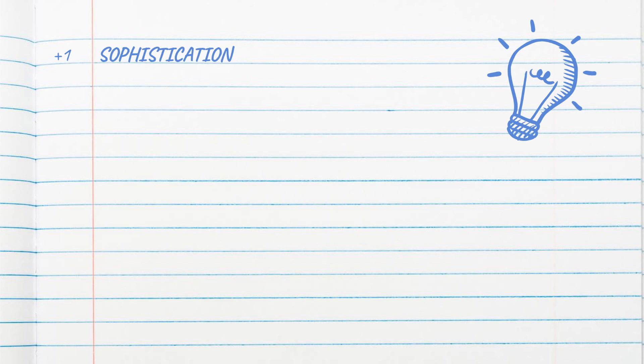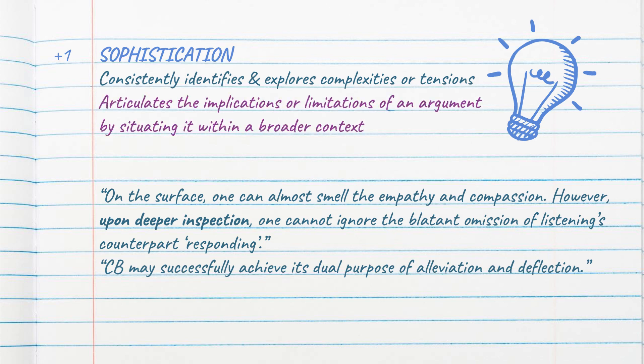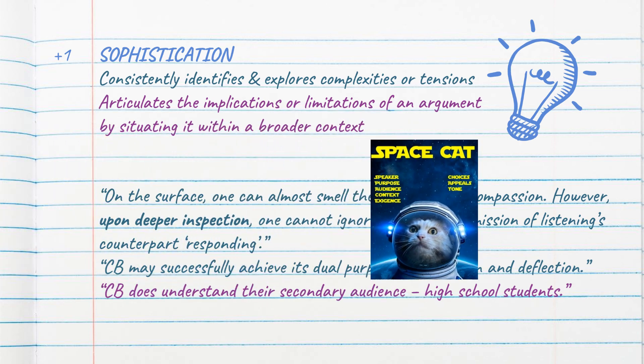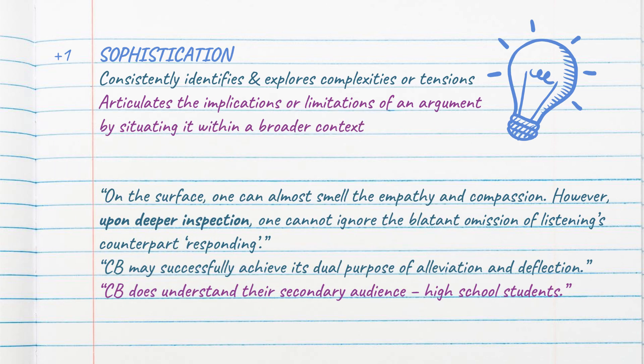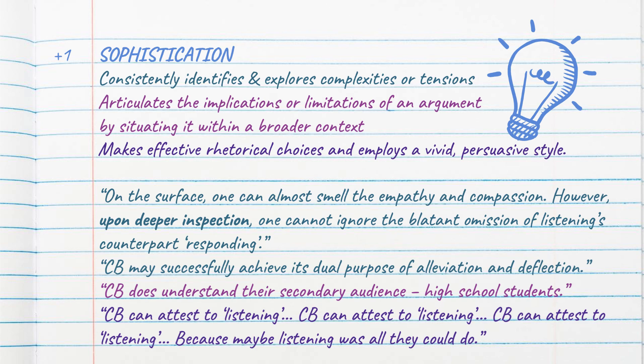Finally, the sophistication point, the hardest point to earn. You can earn this point by indicating the complexities of the argument. Remember that every argument has multiple points of view. You can also place the writer's argument into a broader context. Look up the acronym SPACE CAT if you need ideas on how to do so. And of course, like every good English student, you should be using your own rhetorical devices and fancy style to contribute to the sophistication of your essay.